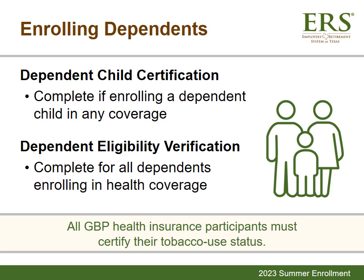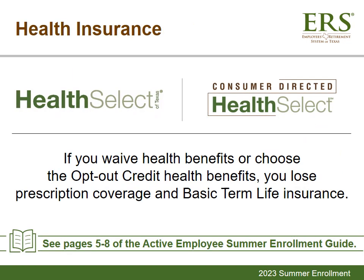All GBP Health Insurance Plan participants must also certify their status as tobacco users or non-users, whether you use tobacco or not. If you don't certify your tobacco use status, the system automatically defaults your status and the status of your enrolled dependents to 'yes,' and you will be charged the applicable monthly tobacco user premium, even if you don't use tobacco. See page 4 of the Active Employee Summer Enrollment Guide for more information.